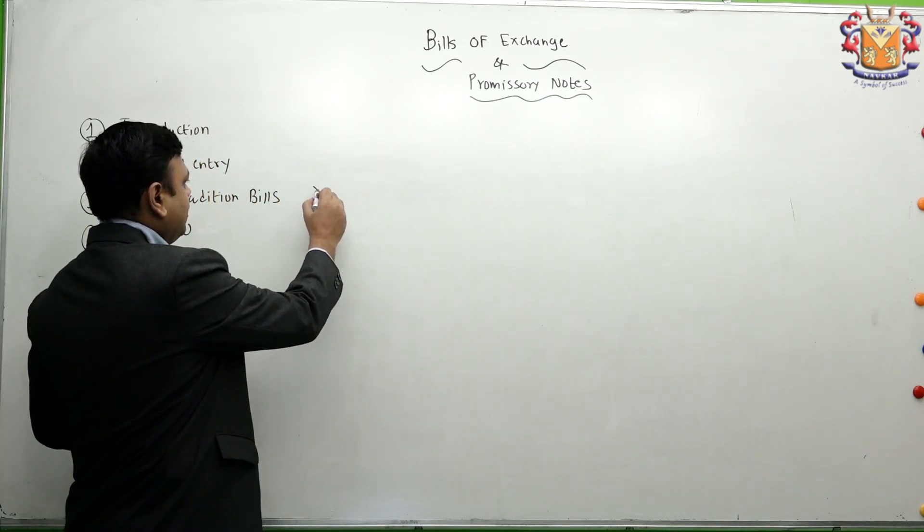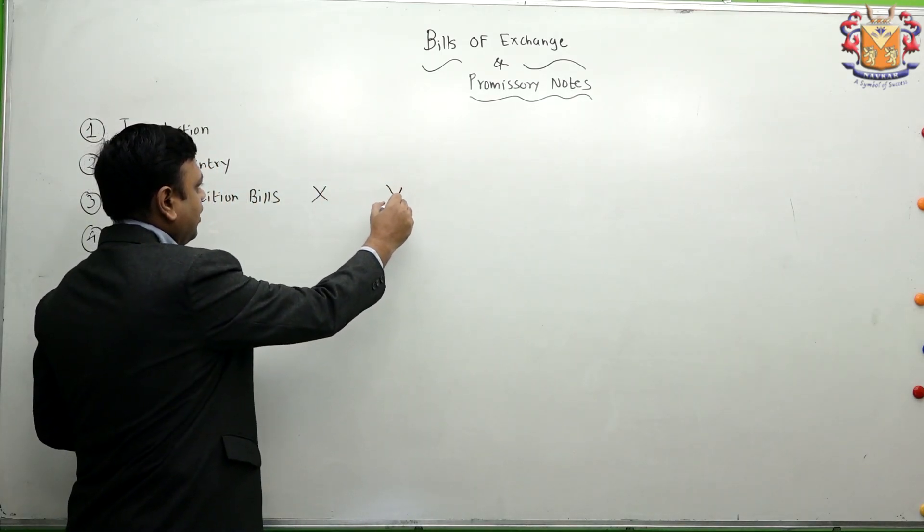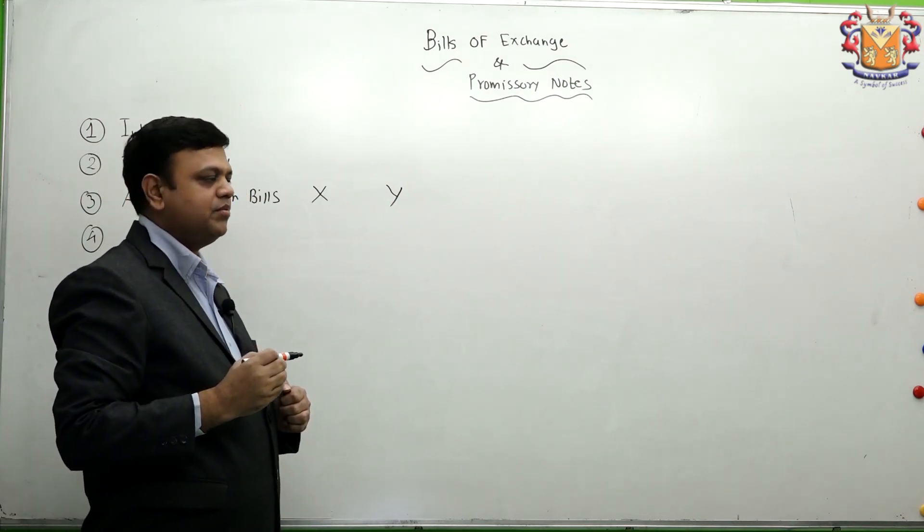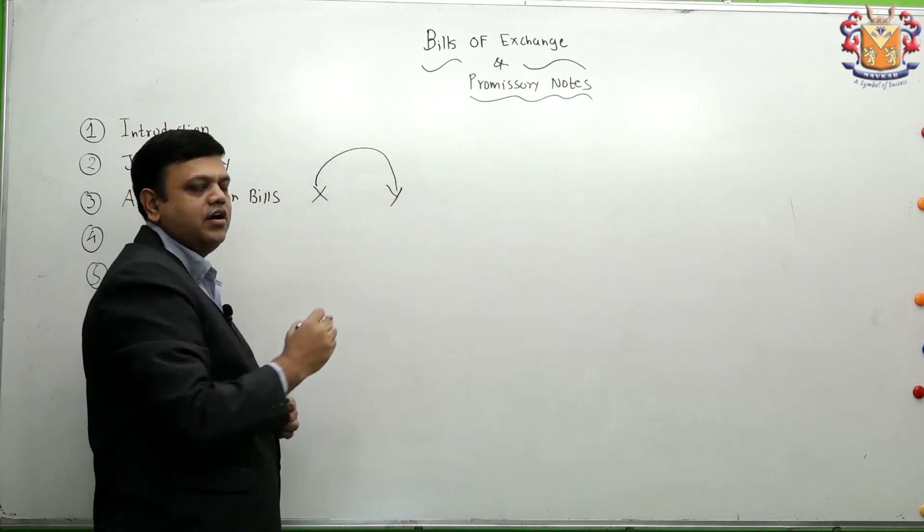We take one story, that is Mr. X and Mr. Y. X is a supplier, Y is a customer. X sold goods to Y on credit.